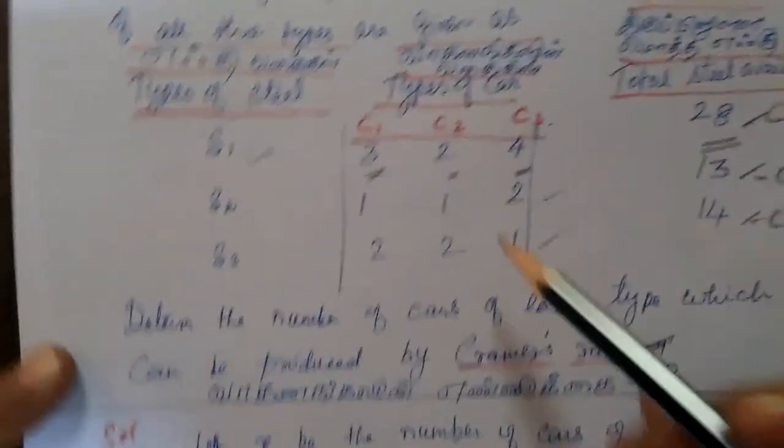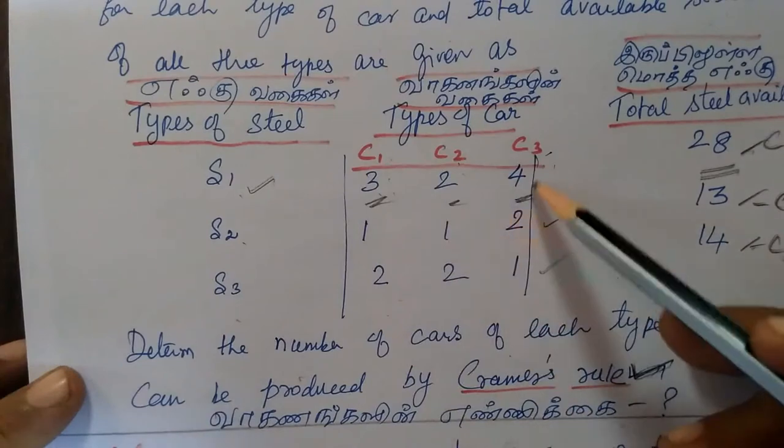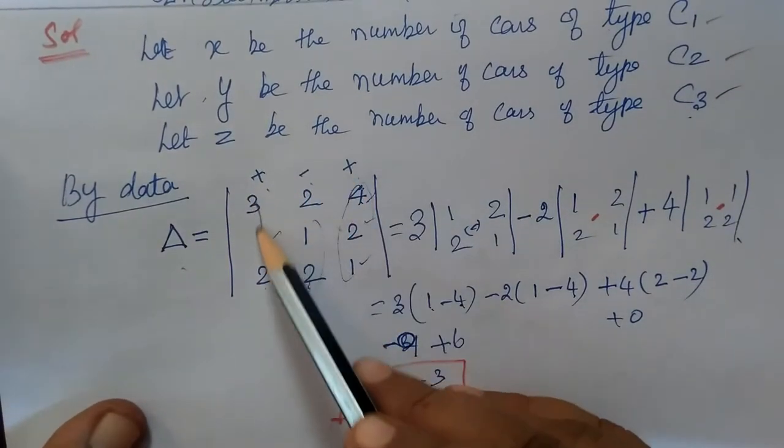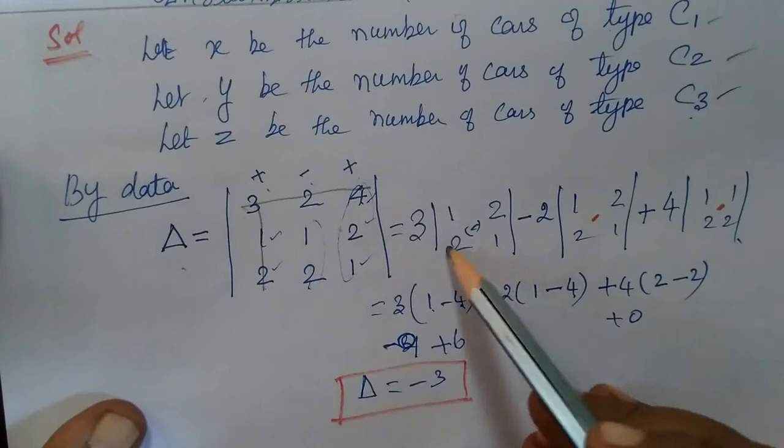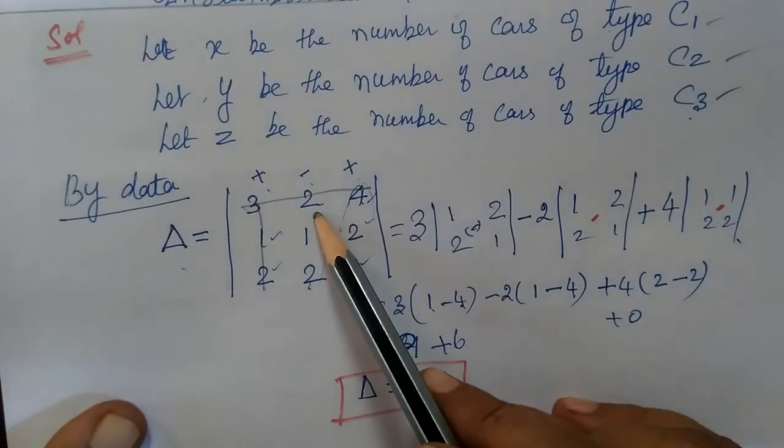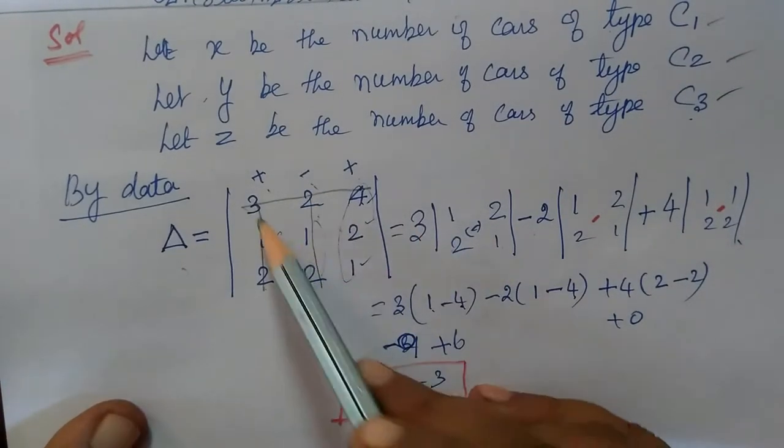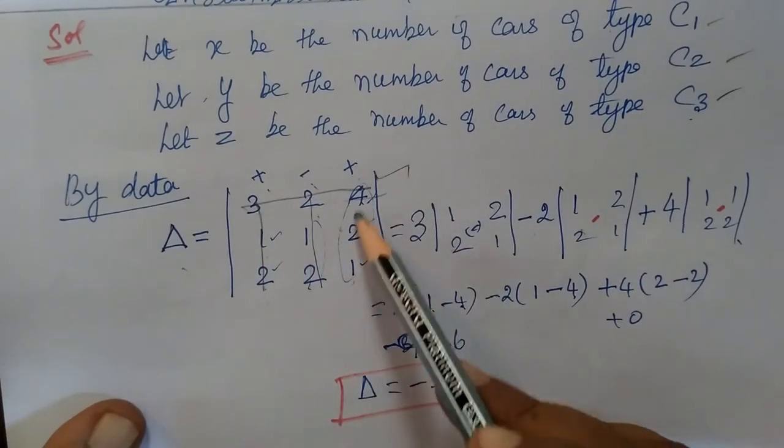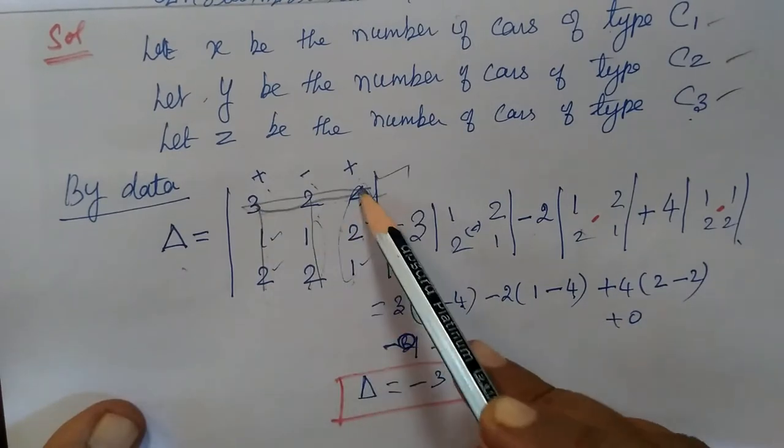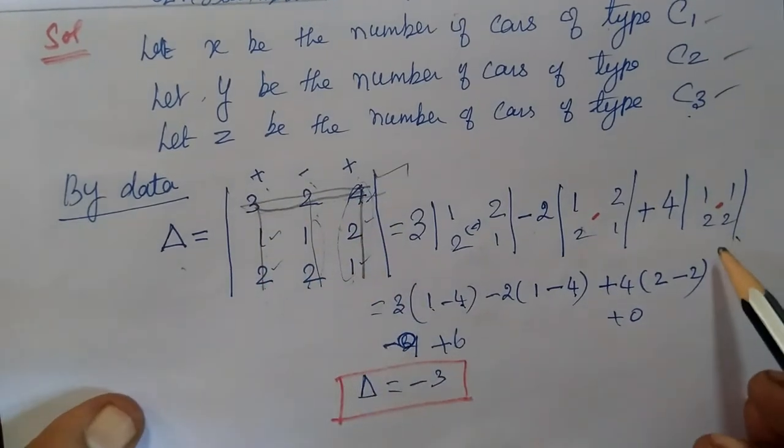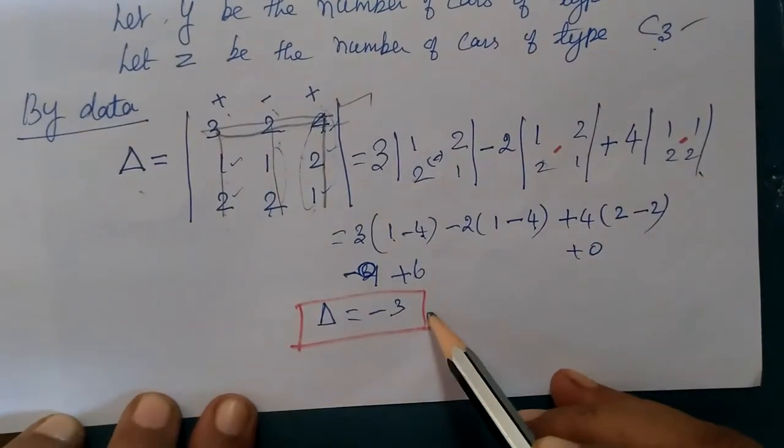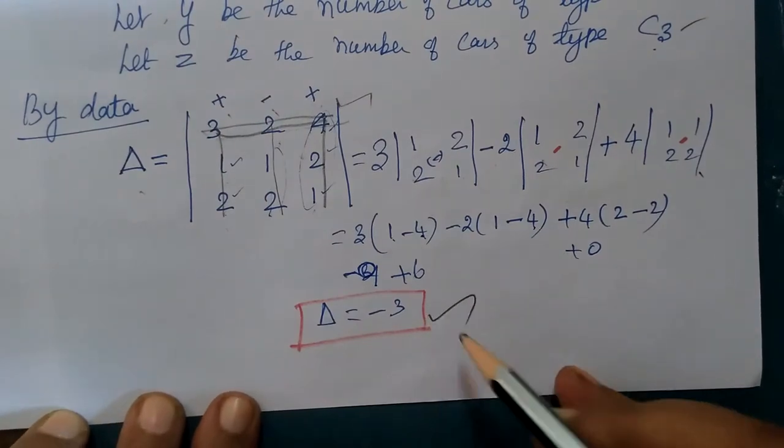So, delta is the determinant of the coefficient matrix. If you have the coefficients, you can find the determinant value.